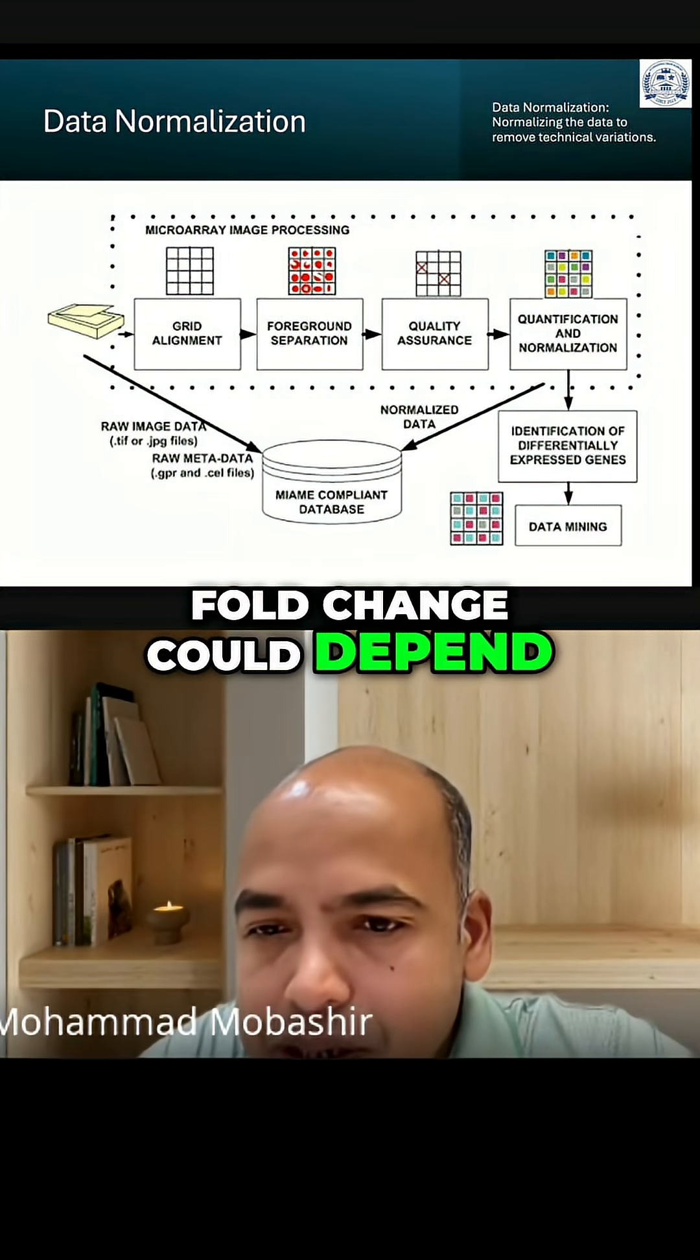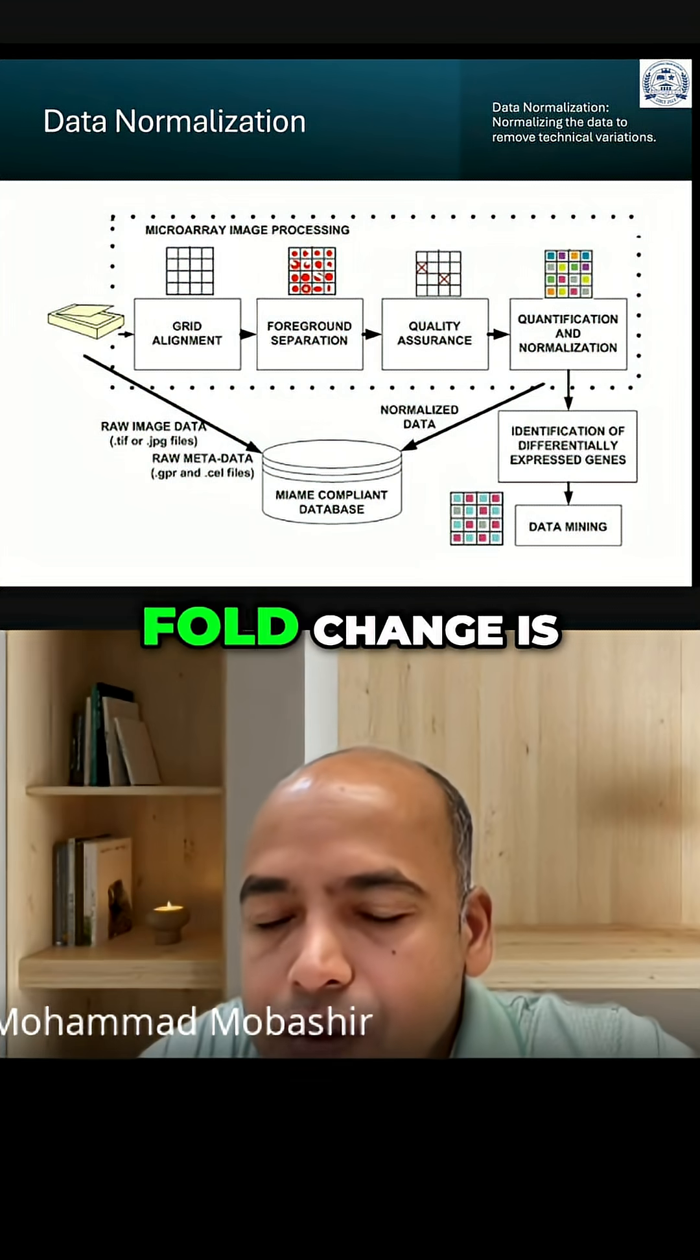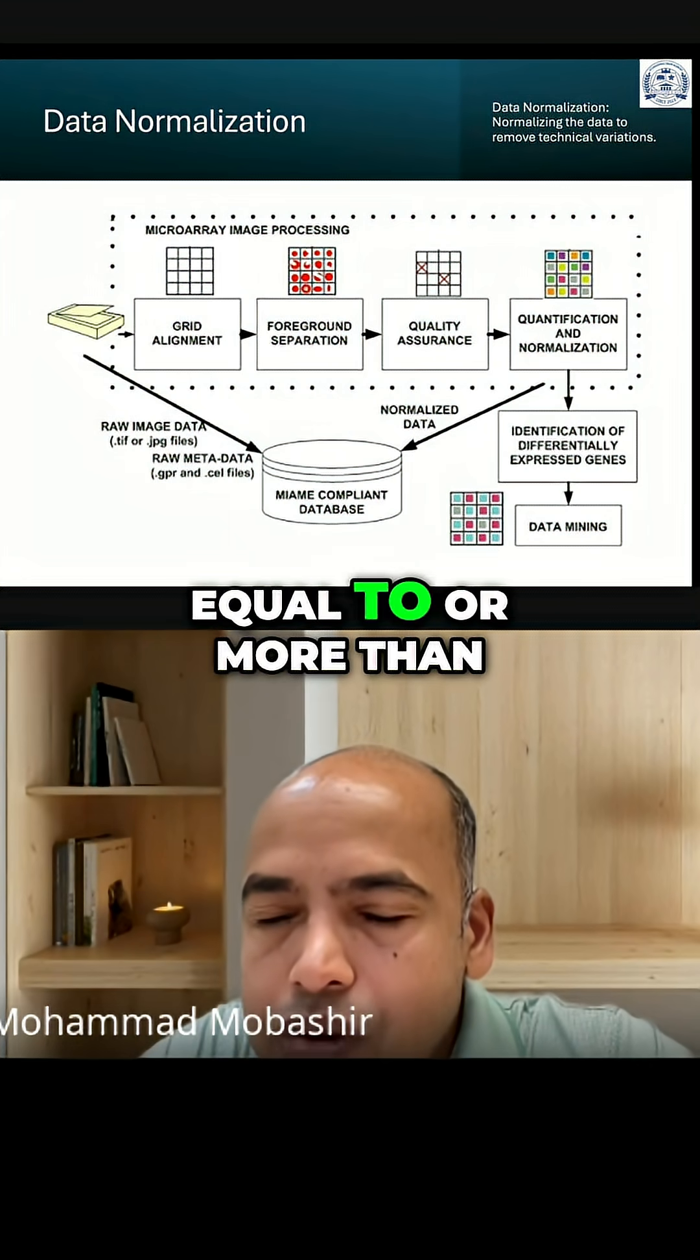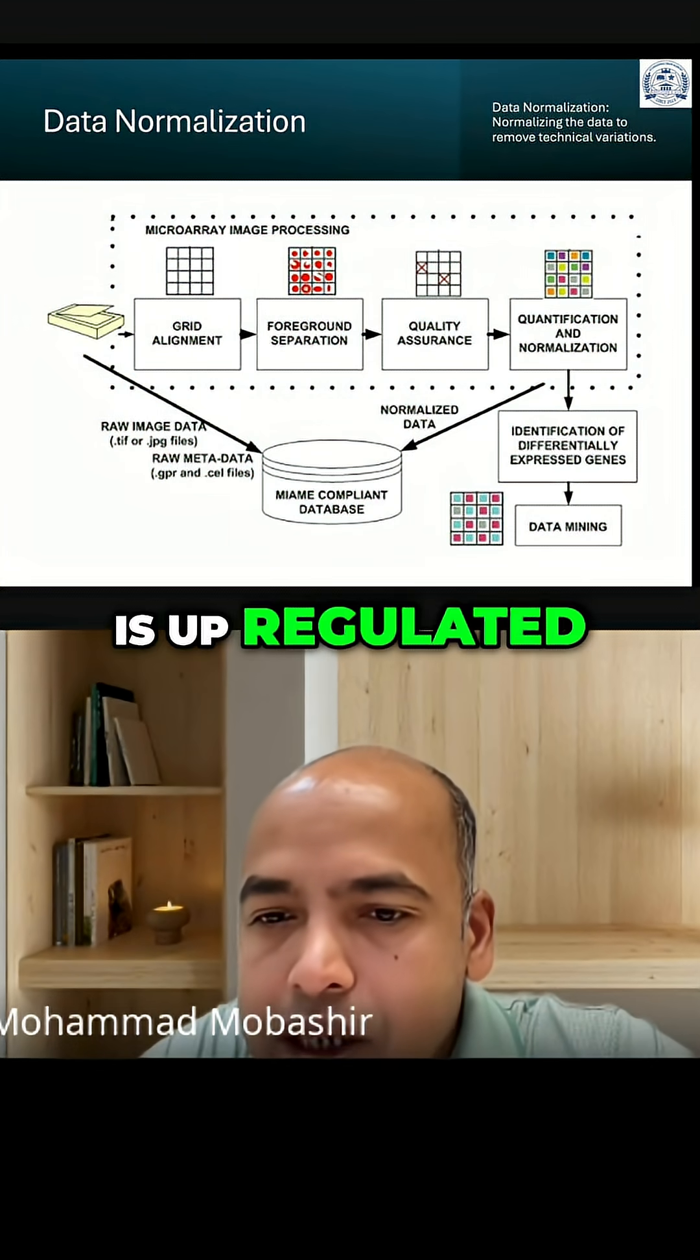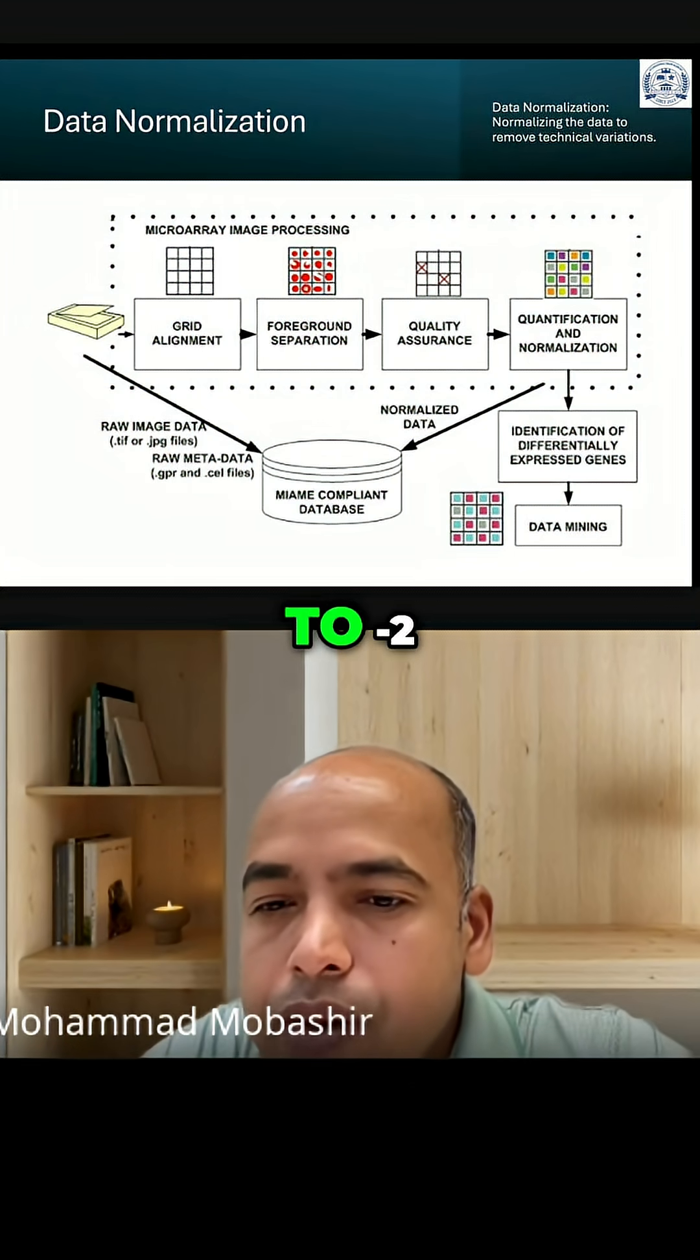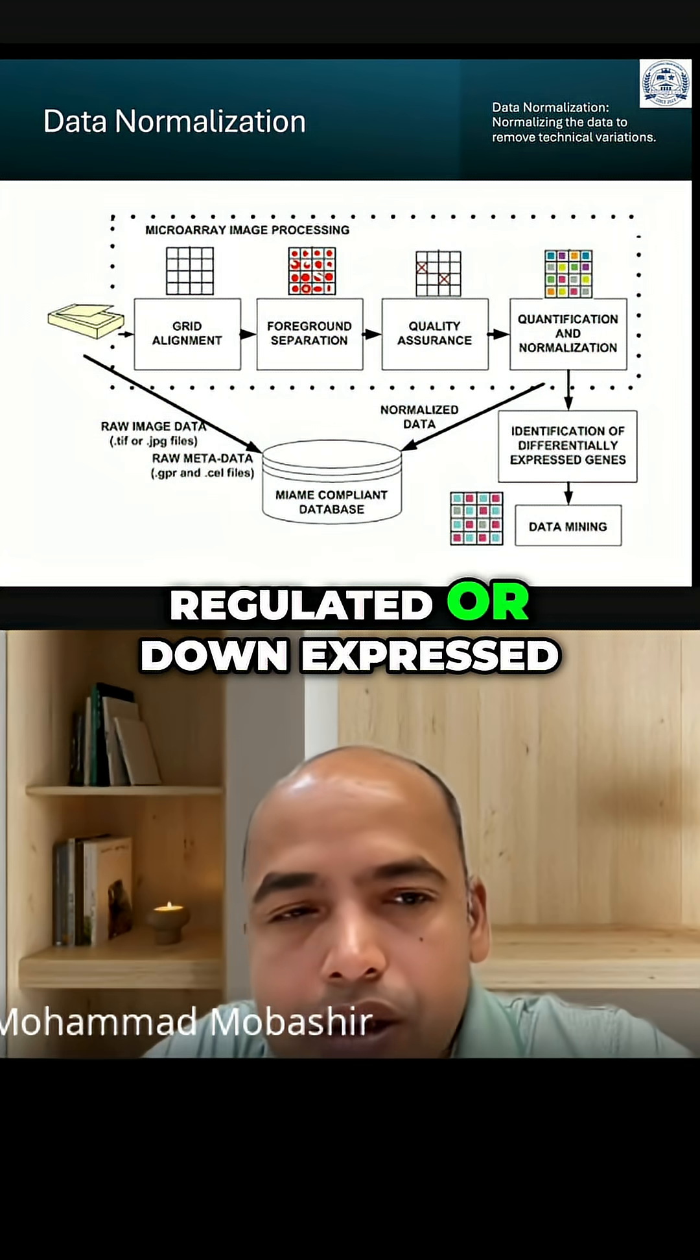Fold change could depend, but in general people use plus or minus 2. That means when the fold change is equal to or more than 2.0, the gene is upregulated. If the fold change is less than or equal to minus 2.0, then the gene is downregulated or downexpressed.